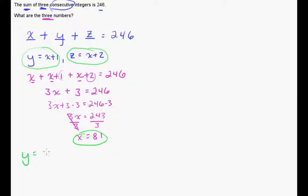So for y, we had 81 plus 1 equals 82. And for z, we had 81 plus 2. That equals 83. So now we have 81, 82, and 83. We have three consecutive integers.